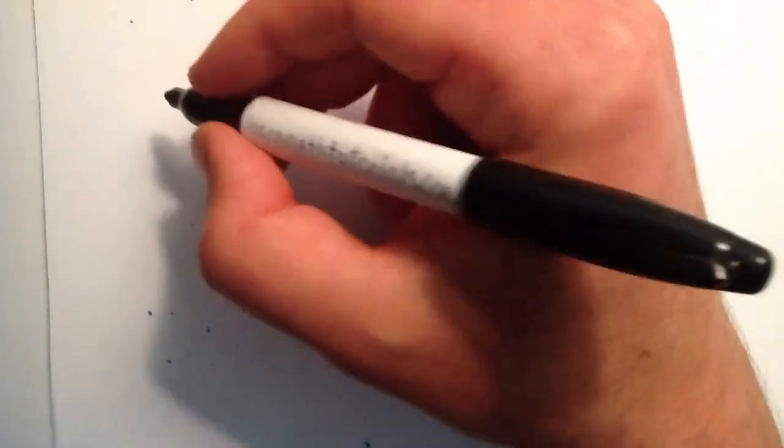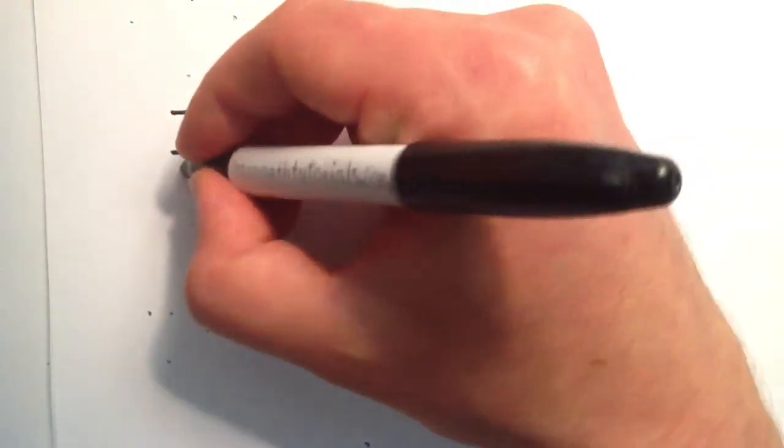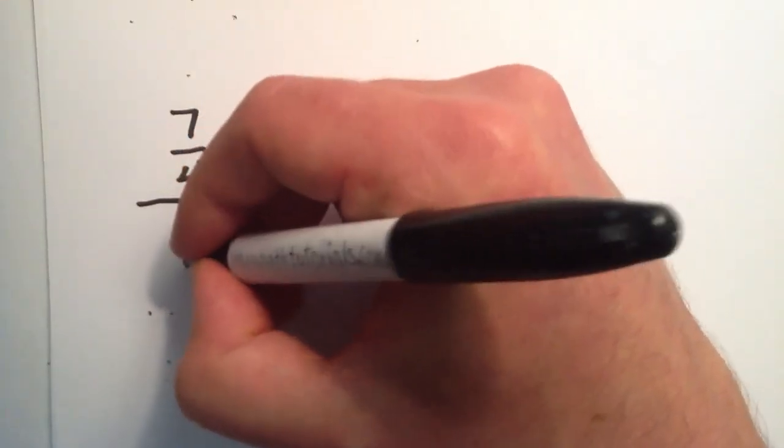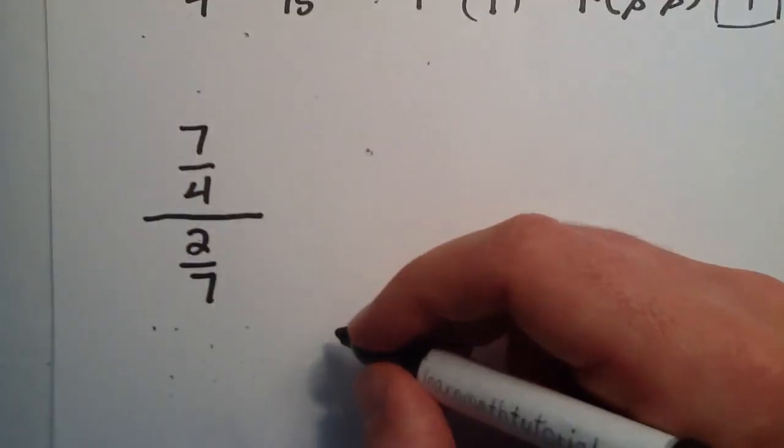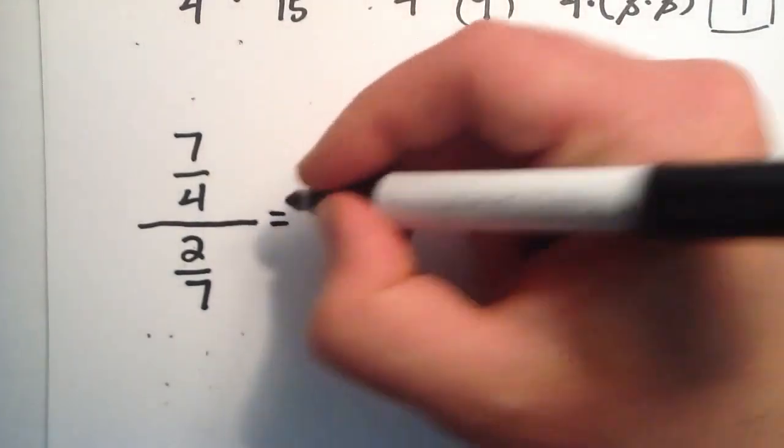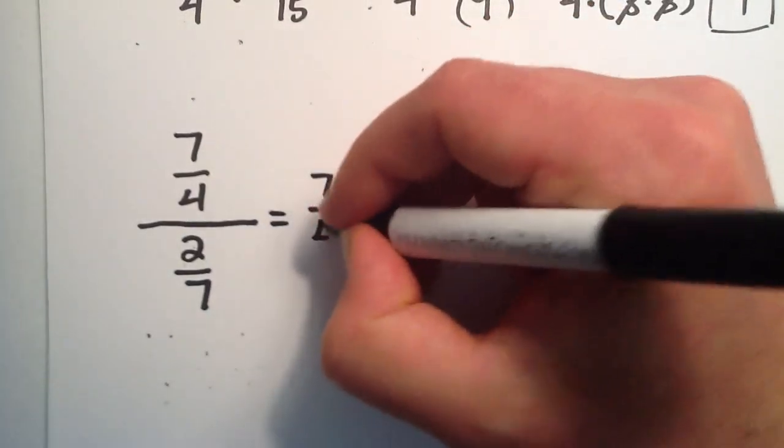Okay, let's write it in a different form now. This time we'll do 7 over 4 and we'll divide that by 2 over 7. So the best thing to do once you see it in this form is just go ahead and write it in the other form because it's easier to work with.